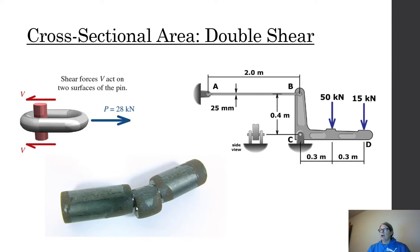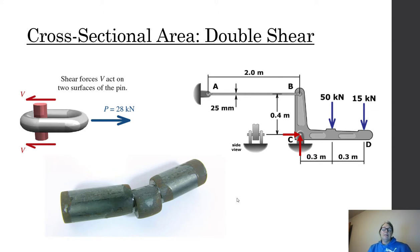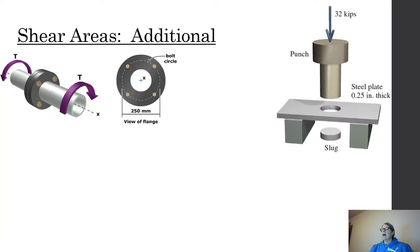In statics, we find reactions at pins as X and Y components, but for shear stress we need the resultant magnitude. The actual force on the pin is the vector magnitude: √(Cx² + Cy²) using the Pythagorean theorem. Use that magnitude of the resultant — not the individual components — to calculate the shear force acting on the pin.